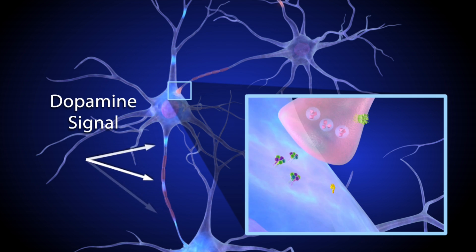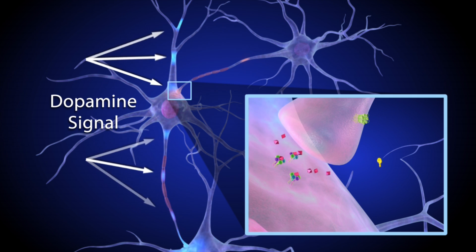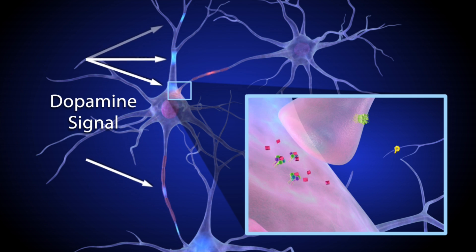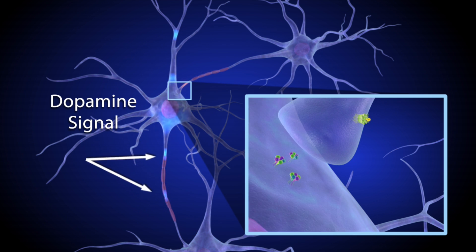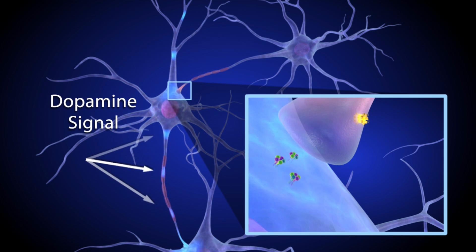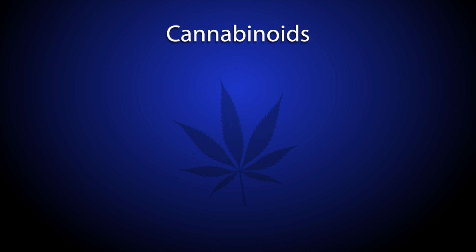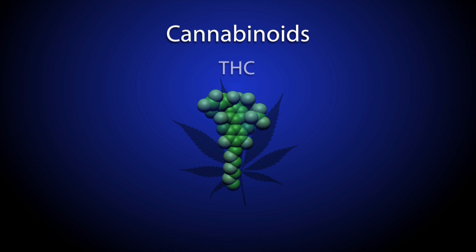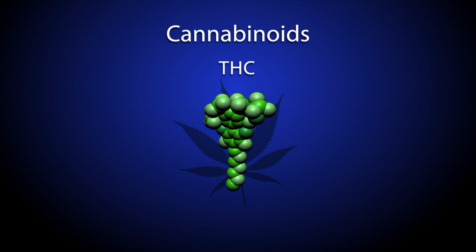Endocannabinoid and other mechanisms that regulate dopamine activity help the brain develop, learn, adapt, and navigate a complex world. Endocannabinoids are molecules that closely resemble the main chemical in the cannabis plant, delta-9-tetrahydrocannabinol, or THC.